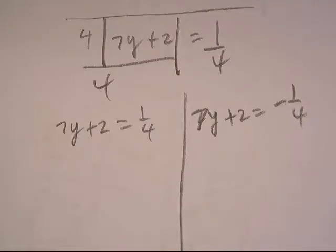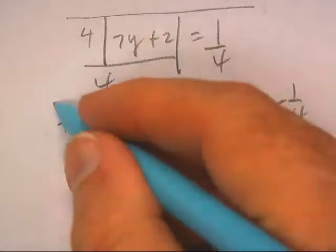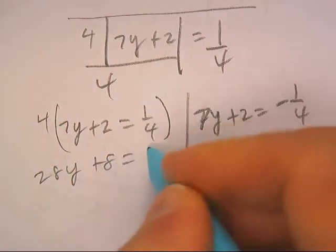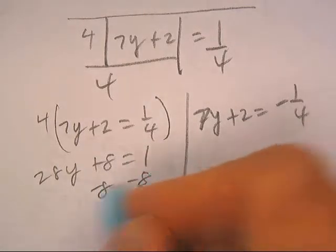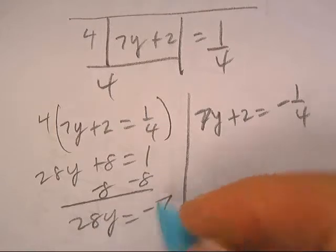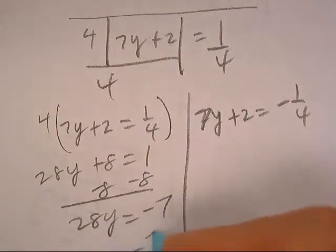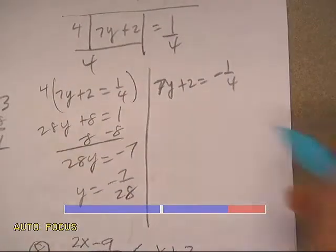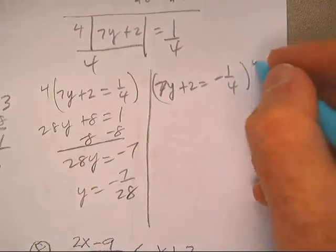However you do this, you might want to multiply both sides by 4. So 28y plus 8 equals 1, subtract 8, 28y is negative 7, divided by 28. There's one answer. And over here if I multiply both sides by 4...